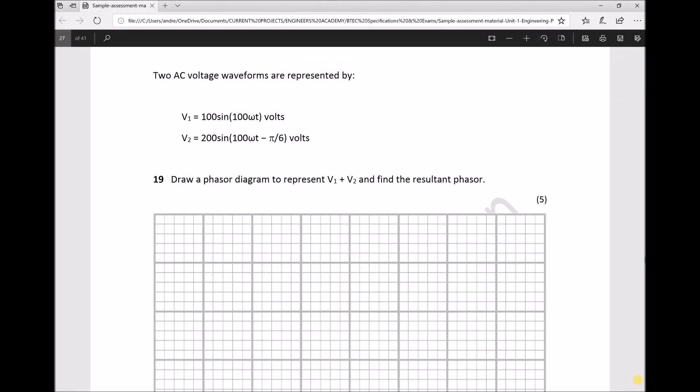Question 19 states: two AC voltage waveforms are represented by V1 equals 100 sine 100 omega t and V2 equals 200 sine 100 omega t minus pi over 6. We're asked to draw a phasor diagram to represent V1 plus V2 and find the resultant phasor.